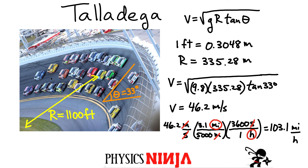Now these cars go much faster than that, and that's because of the force of friction between the tires. So in the next video, which I'll link below, I'm going to look at what happens when I add friction to this problem — how it changes the free body diagram. We'll go back to Talladega and see if we can get new numbers when we include the force of friction.